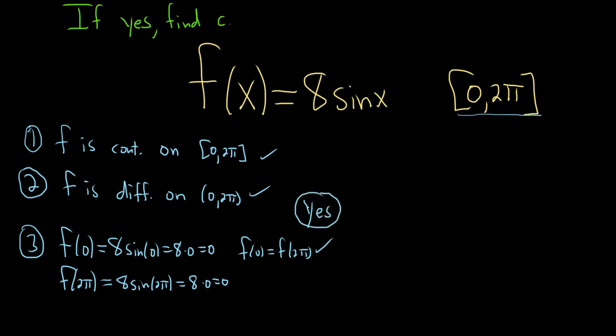So now we do have to find c. Rolle's theorem says that when all three conditions hold, you can find some number, which the theorem denotes by the letter lowercase c, such that the derivative is equal to 0 there, between 0 and 2π. So now we'll just take the derivative and look for all of the answers between 0 and 2π.